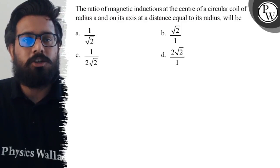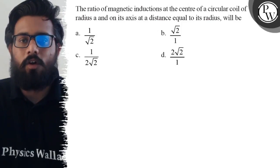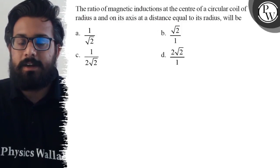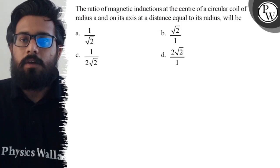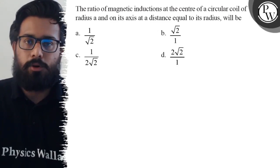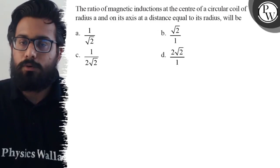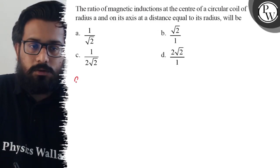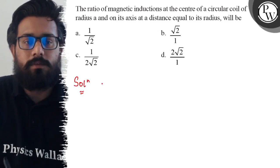Hello, let's see the question. The ratio of magnetic induction at the center of a circular coil of radius a and on its axis at a distance equal to its radius will be: Option a is 1 by root 2, option b is root 2, option c is 1 upon 2 root 2, and option d is 2 root 2. In this question we have to find out the ratio of the magnetic induction at the center upon axis.